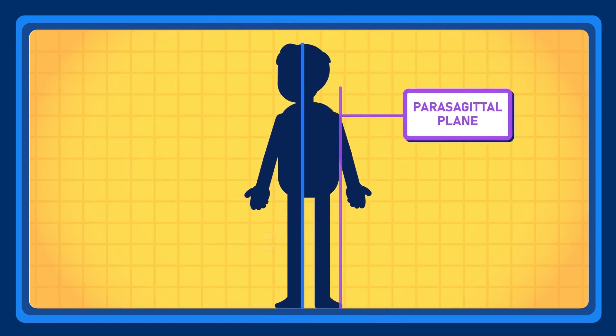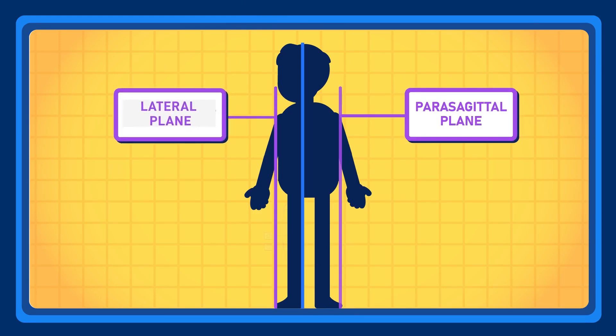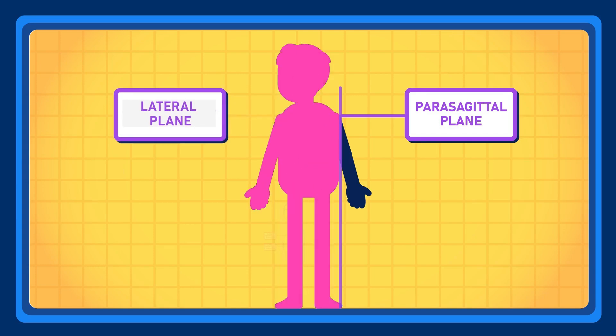On the other hand, the longitudinal or parasagittal plane is any vertical plane parallel to the median plane, but not located in the middle. Thus, it does not divide the left and right parts of the body equally.